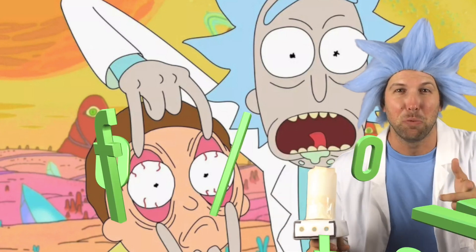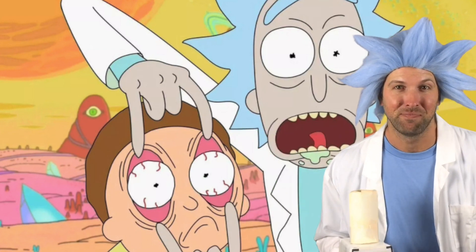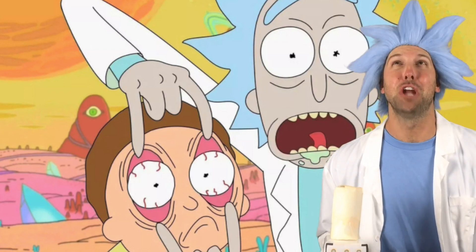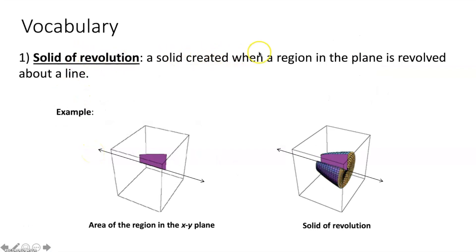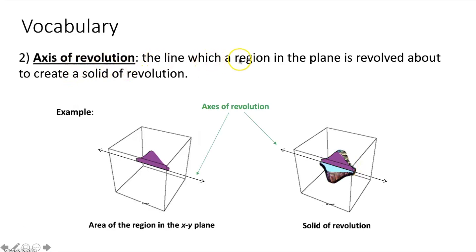Hey there, rotational Rick back talking to you about solids of revolution using the disc method. What do you call a detective who gets electrocuted? Sherlock Ohms. First thing we're talking about is a solid of revolution — that would be a solid created when a region in the plane is revolved about a line. The axis of revolution is the line which a region in the plane is revolved about to create a solid of revolution.